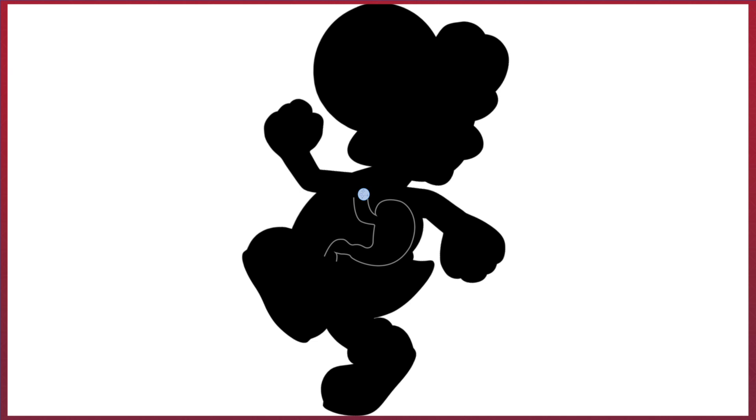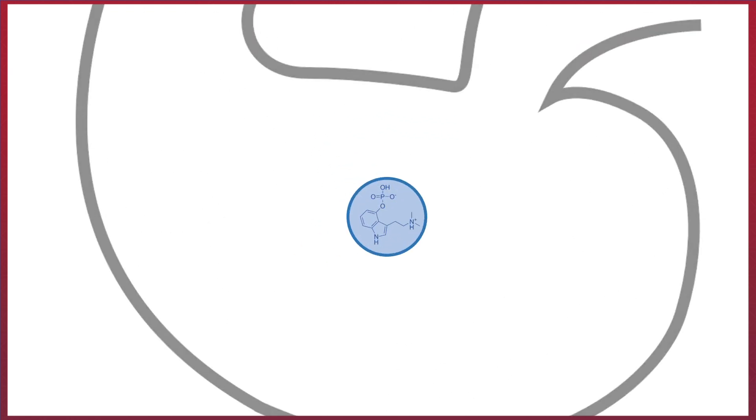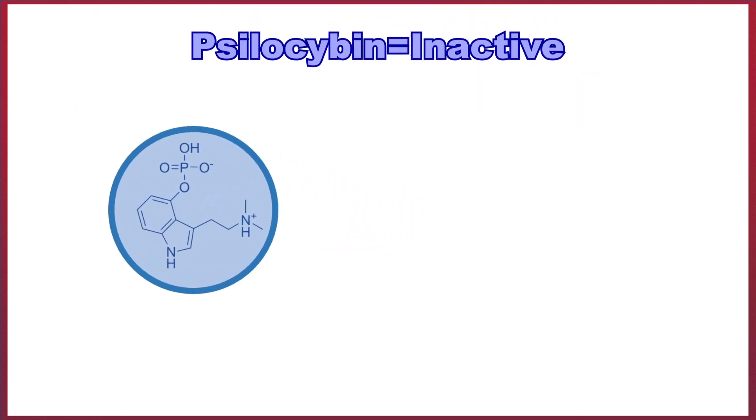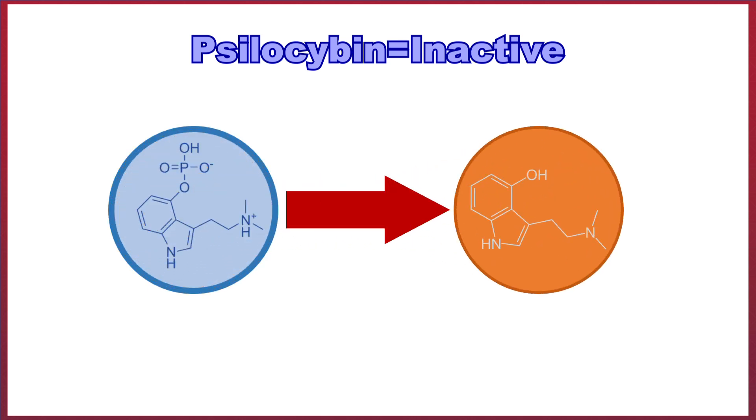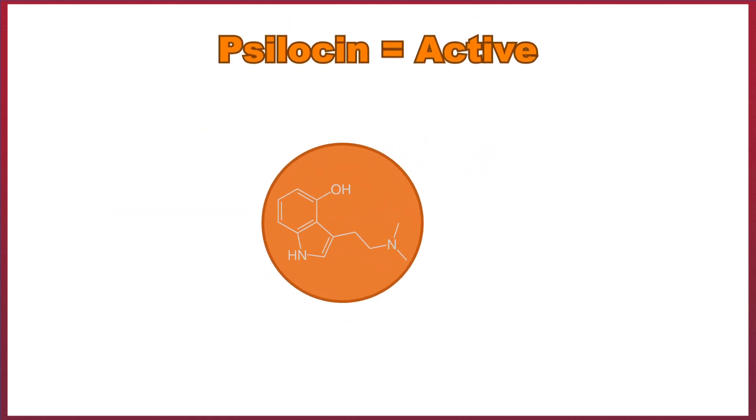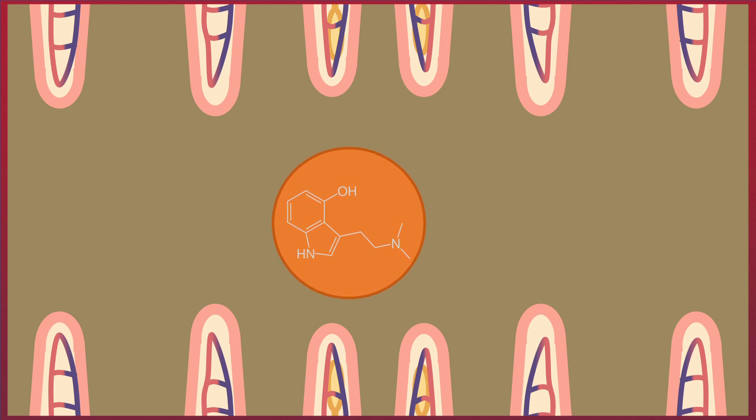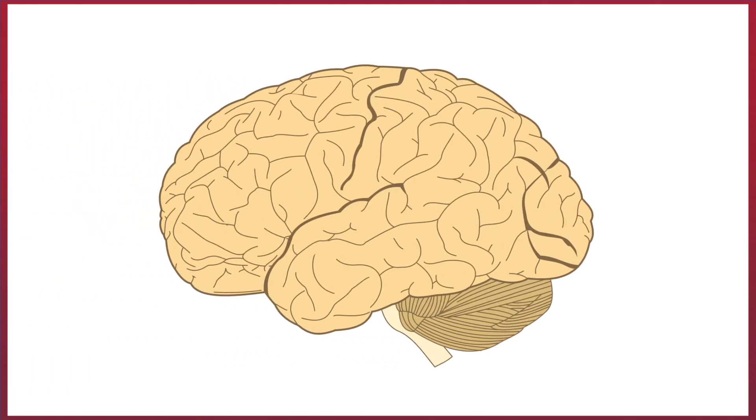So what happens when Yoshi ingests the psilocybin? When psilocybin enters the body, it's inactive. Upon being ingested and then digested, it's converted into its active form, which is a chemical called psilocin. This lipid-soluble chemical is then absorbed into the bloodstream through the intestine, which distributes it all around the body. From there, it can reach all areas, including the brain.